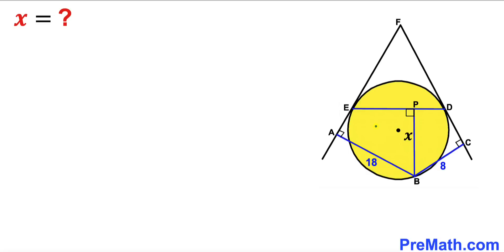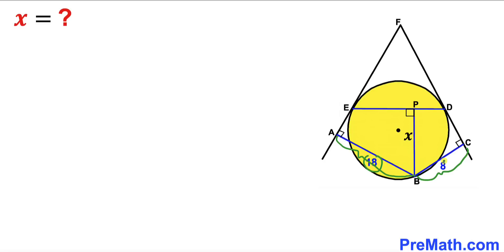Welcome to pre-math. In this video we have a yellow circle fully confined between two tangent lines, such that line segment PB is perpendicular to chord DE. The length of this perpendicular PB is X units, line segment AB is 18, and line segment BC is 8 units. Our task is to find the value of length X.